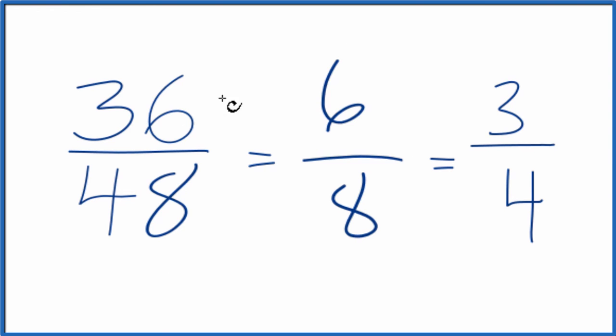These are equivalent fractions. If you divide 36 by 48, or 6 by 8, or 3 by 4, you're gonna get 0.75. They're all the same value.